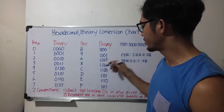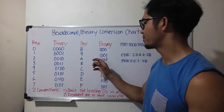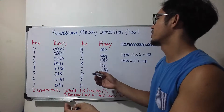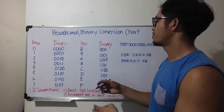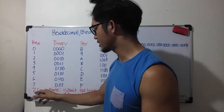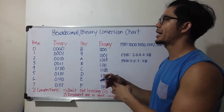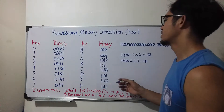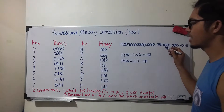This chart shows the conversion of these hex characters. You can look at the chart and figure out how a decimal is converted into binary. At the bottom, I've written two conventions you can use to write an IPv6 address in a shorter version. For example, you can use these two conventions to make this IPv6 address shorter.